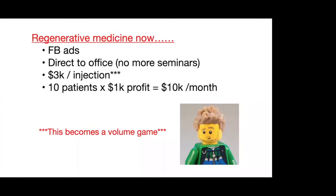Here's where we are with regenerative medicine now — it's a somewhat different sales process. You're doing Facebook ads or newspaper or television ads, but instead of doing seminars, you're doing direct-to-office visits. Because these services are in many cases covered by insurance, you don't have to go through this intricate seminar or sales process to educate the patient before you talk about the service. On average, you'll see about $3,000 in reimbursement if you're billing it to insurance.